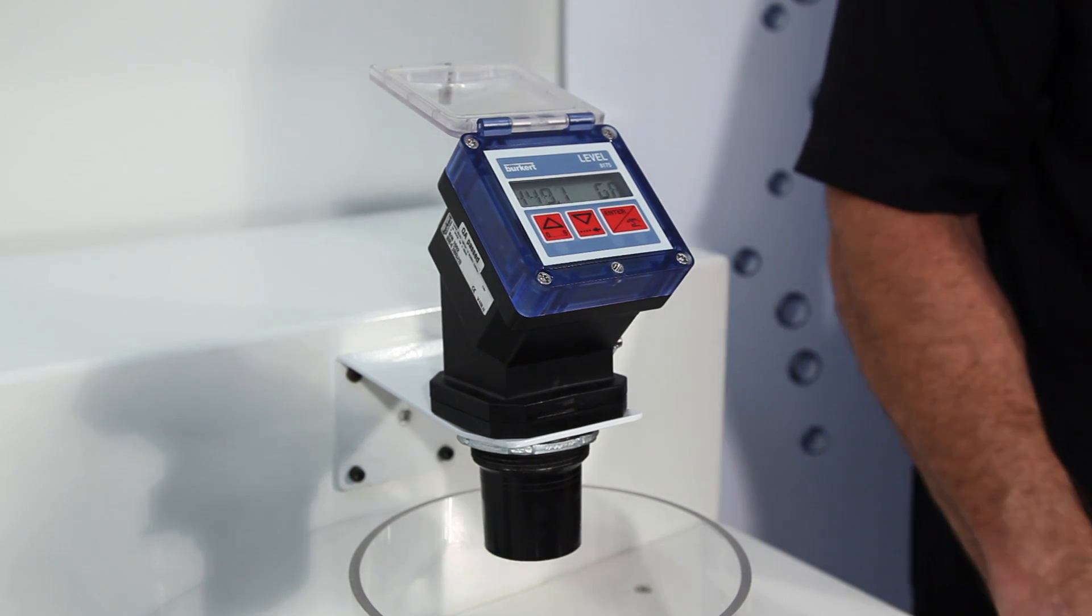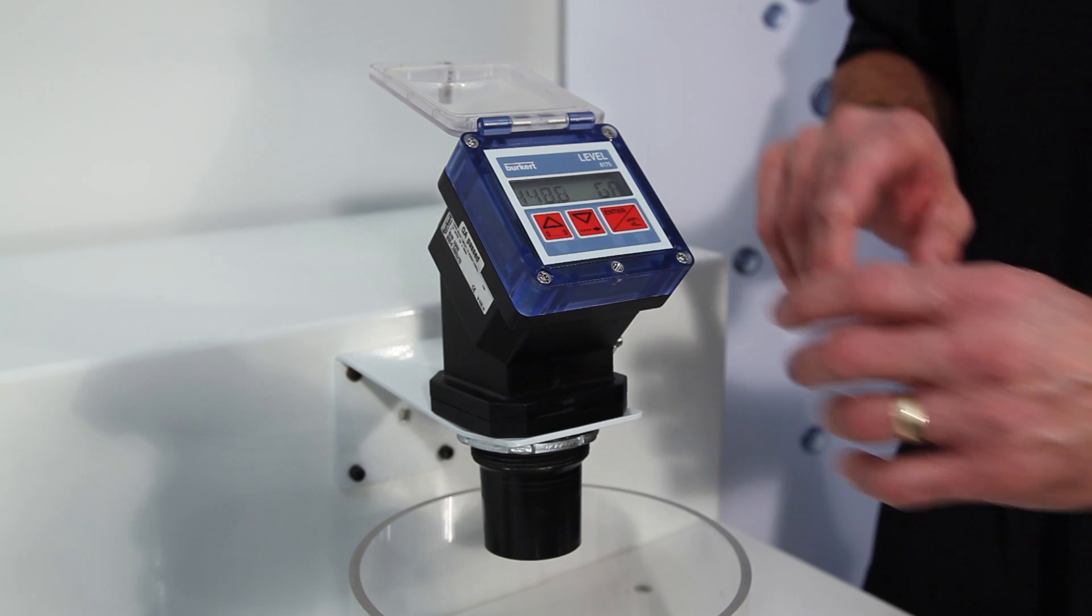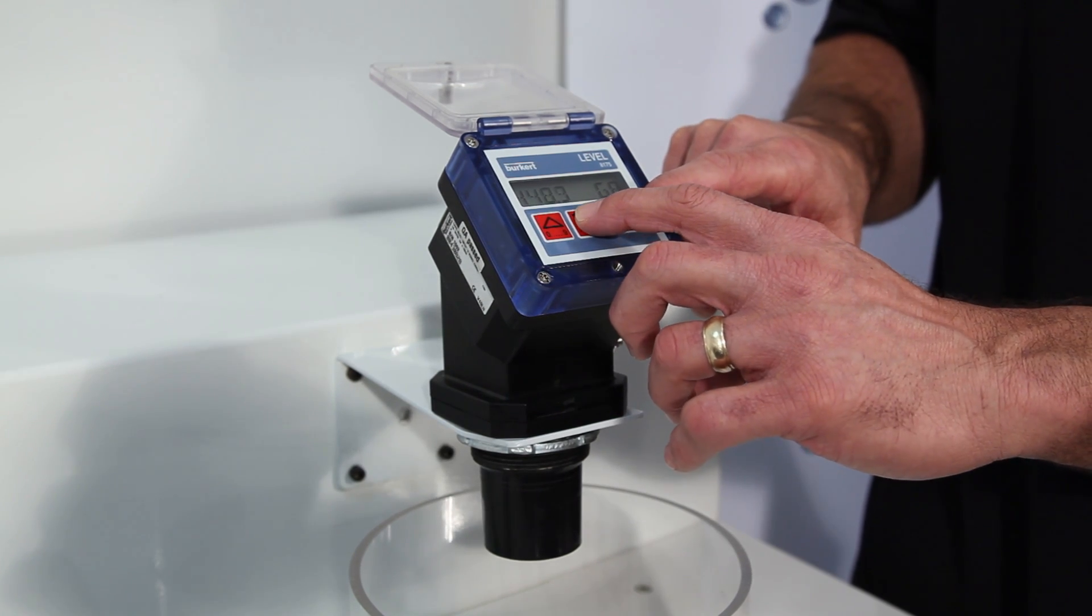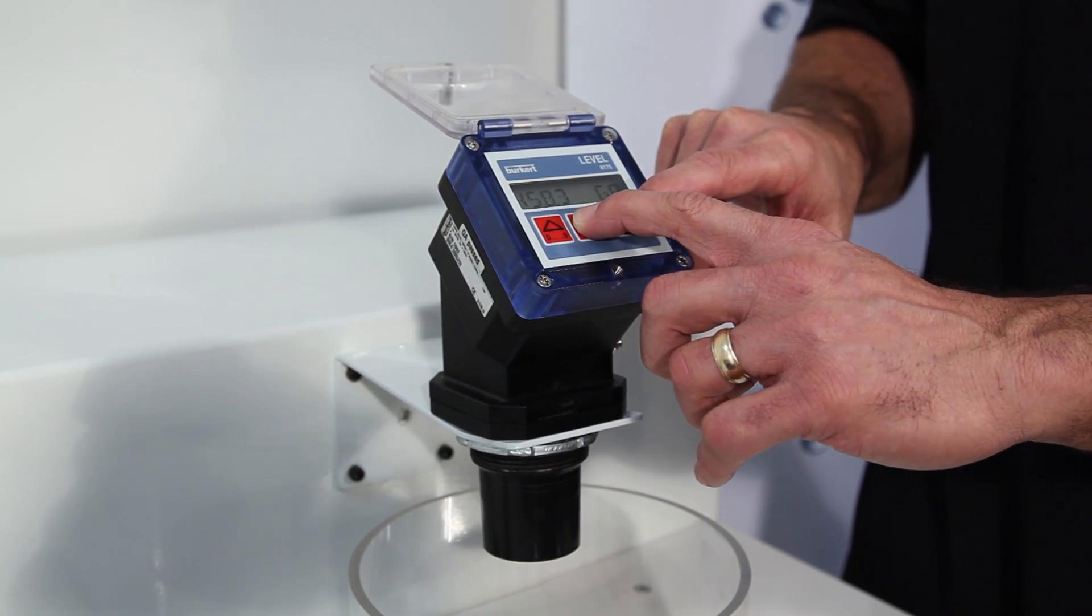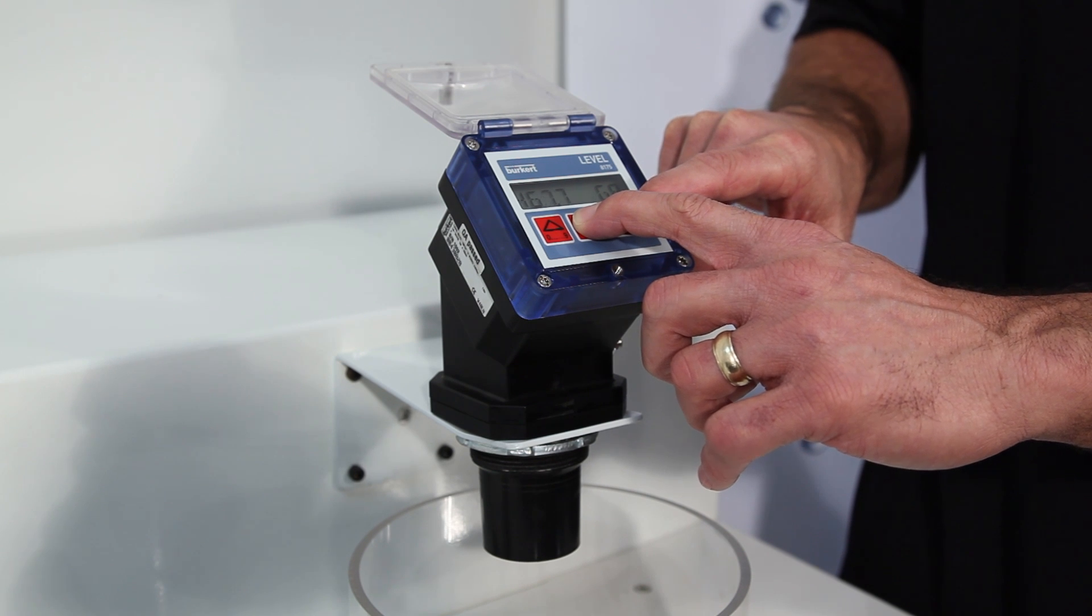With the device already set up in gallons, hold down the down arrow and the enter key together for about 5 seconds. This will put you into the calibration mode.